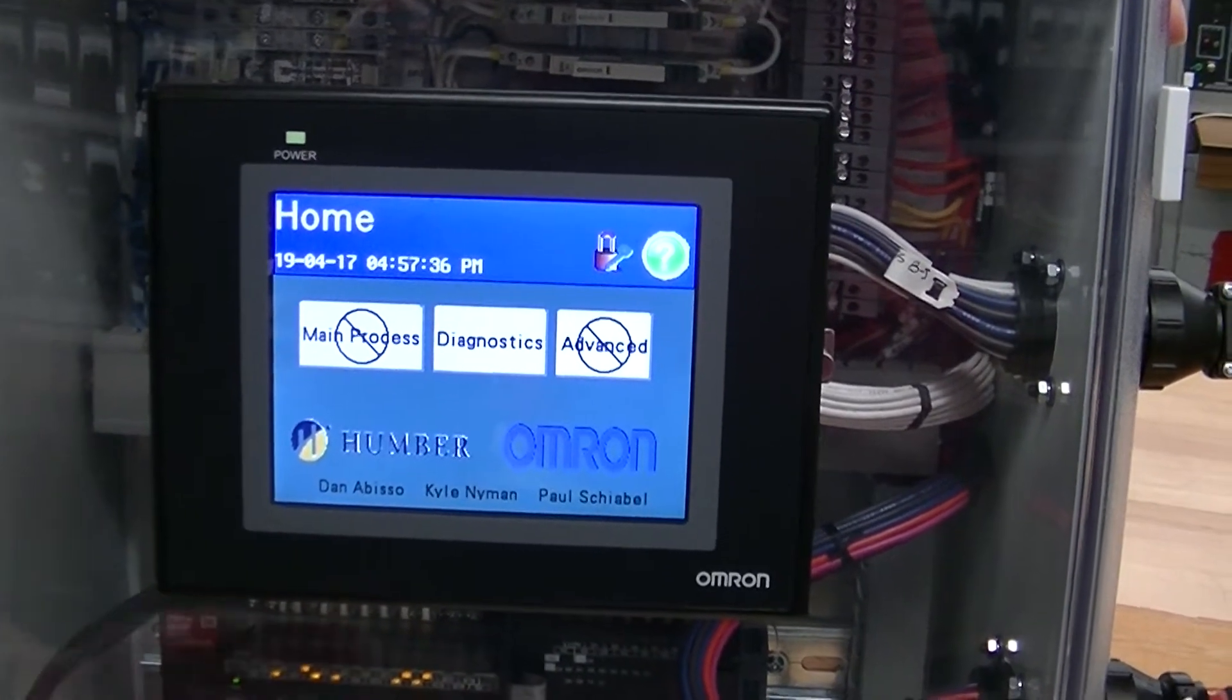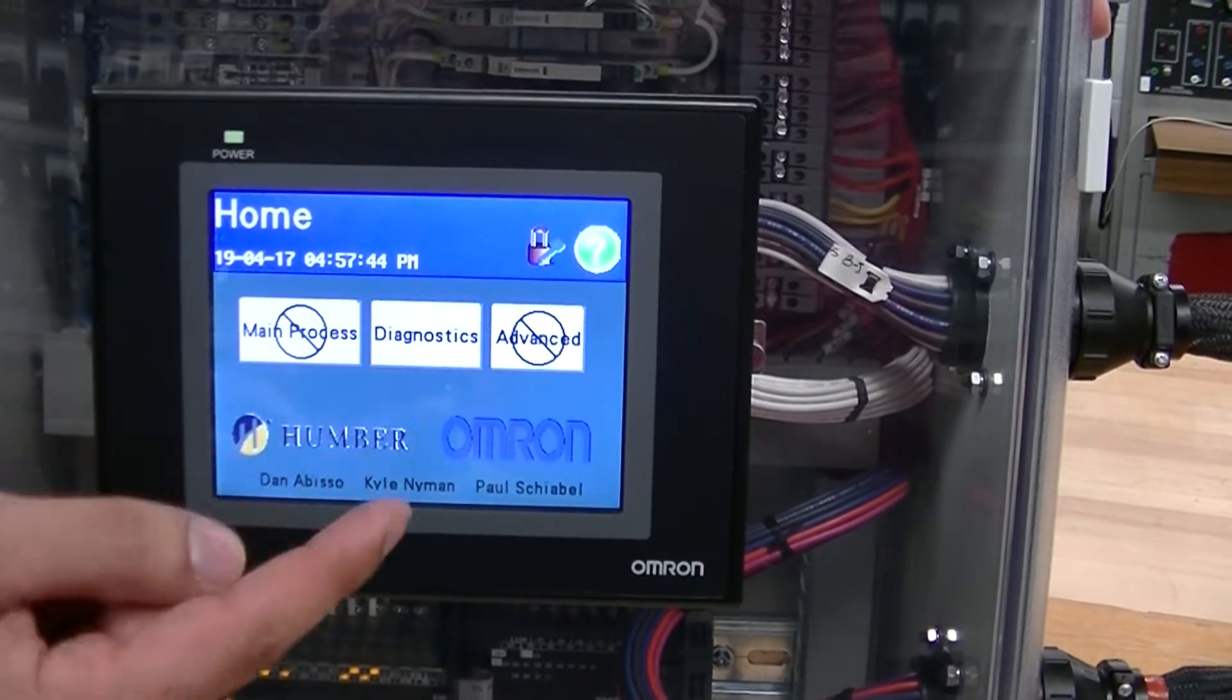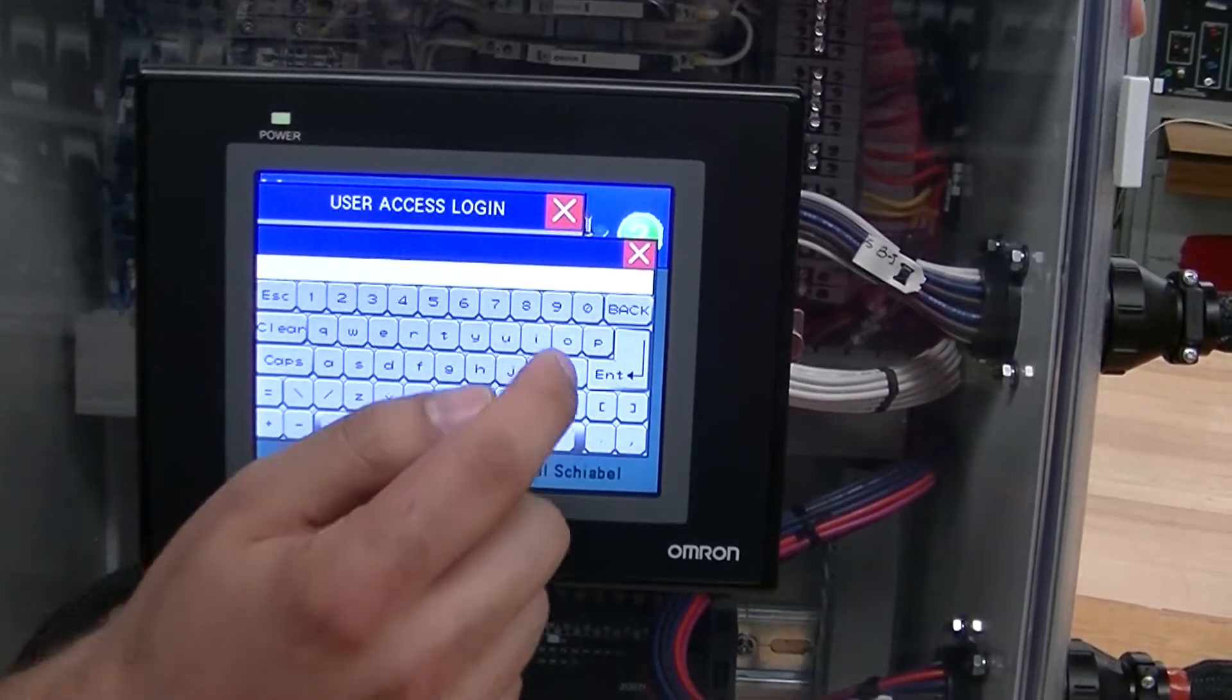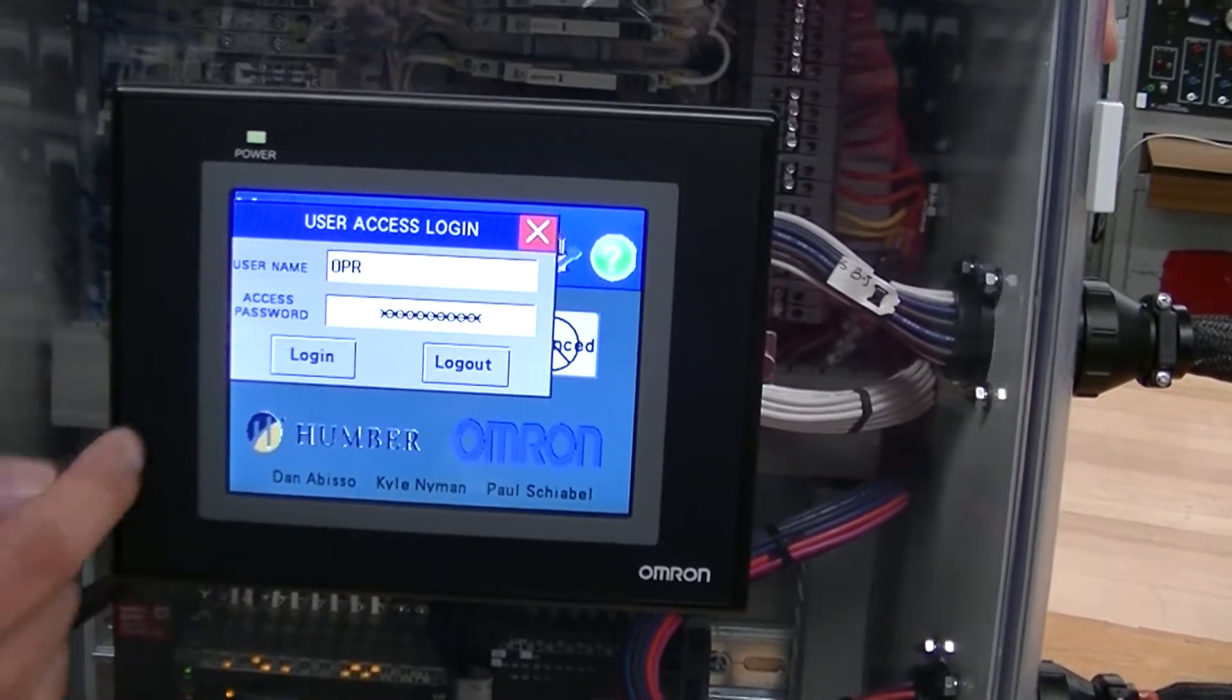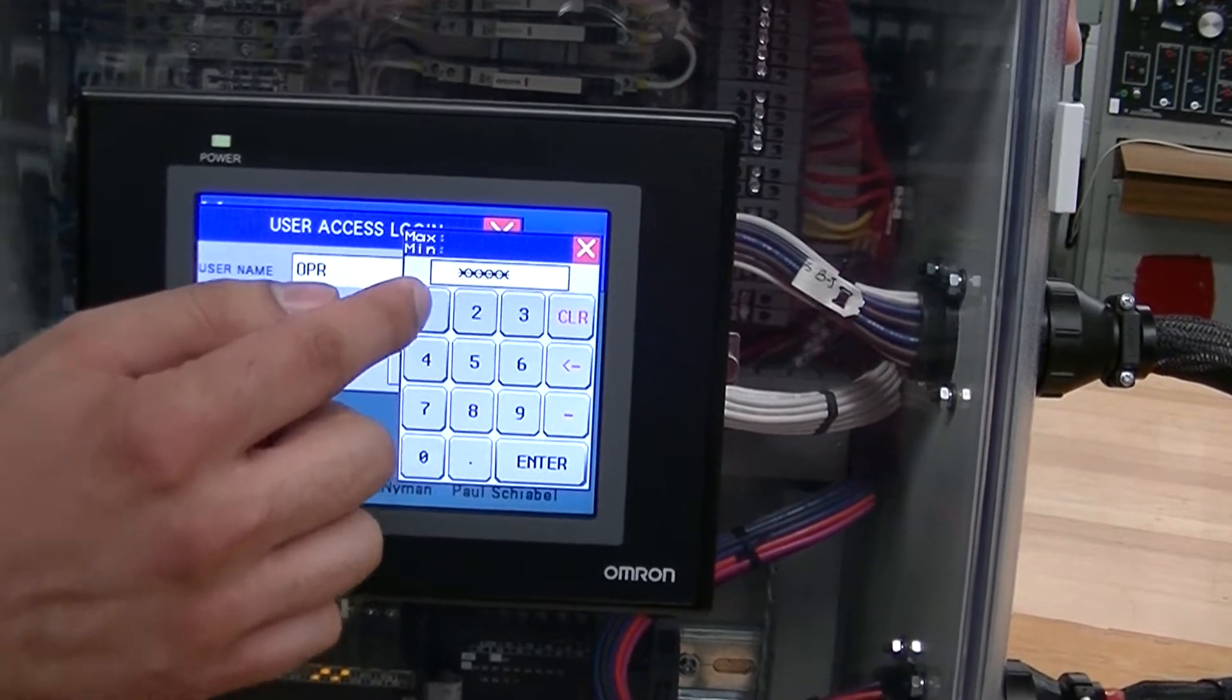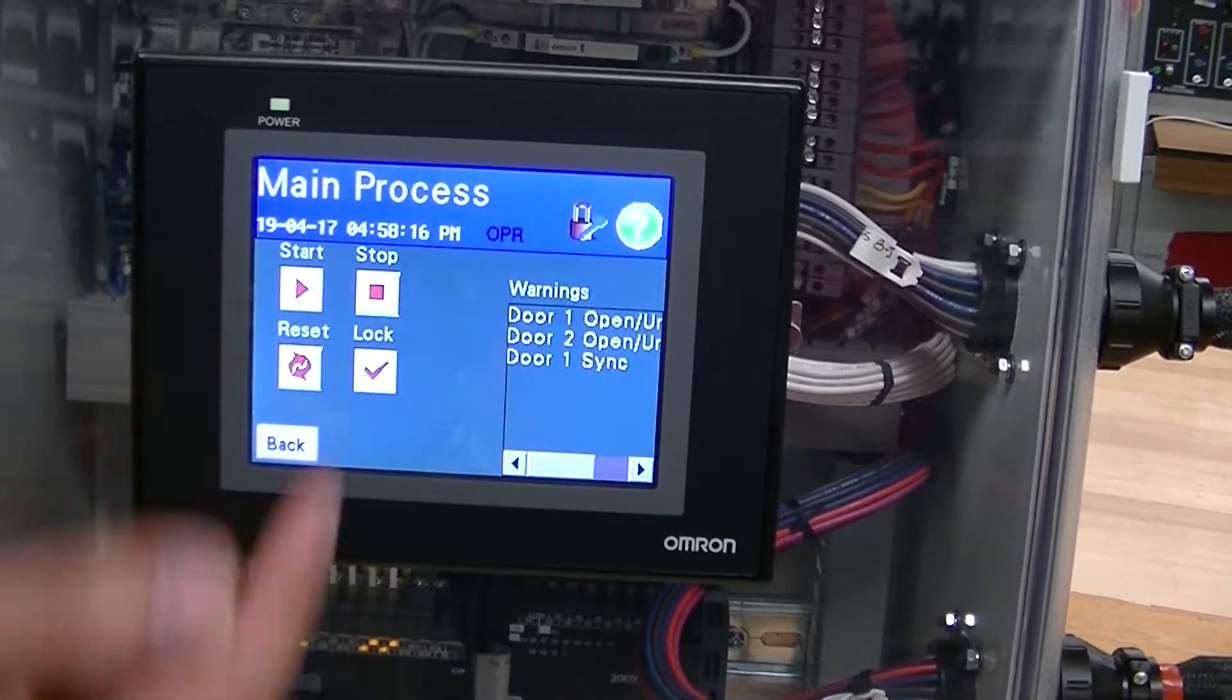The first thing you would want to do is log in. We have three different logins available: an operator login, a maintenance personnel login, and a supervisor login. We will start with operator. To log in, you click this login button, this window pops up, so you click the username to login. Operator username is OPR in all caps, password is 11111161, hit enter, login. You are now logged in, and now you can see the main process is available.